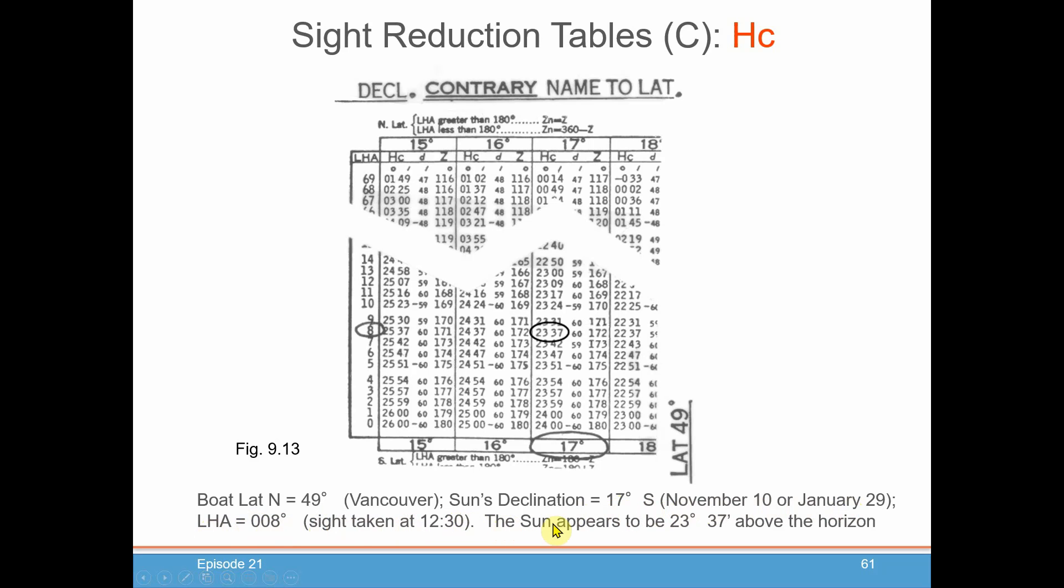If you go into your table, you go 17 degrees declination, 8 degrees LHA. Where they cross gives you your HC, as you see here. Therefore, the sun will appear to be about 23 degrees and 37 minutes above the horizon.